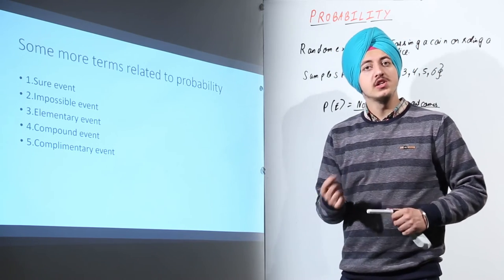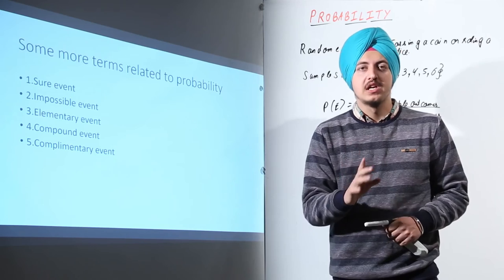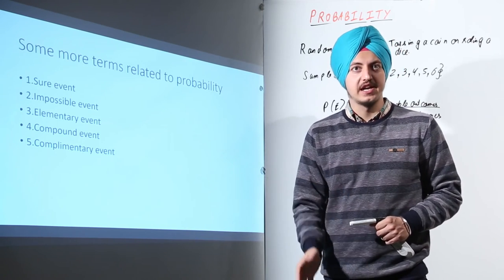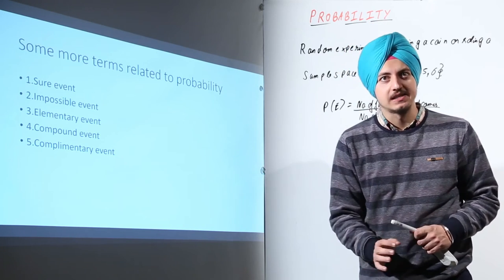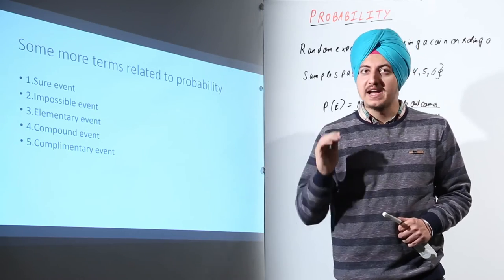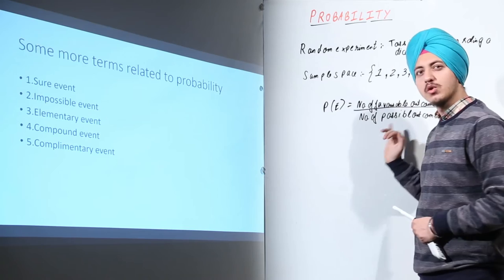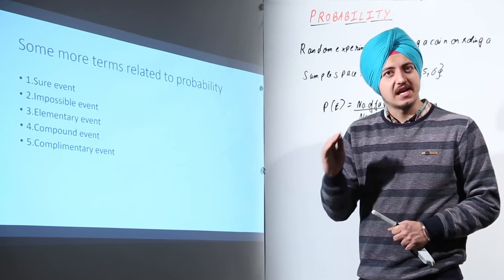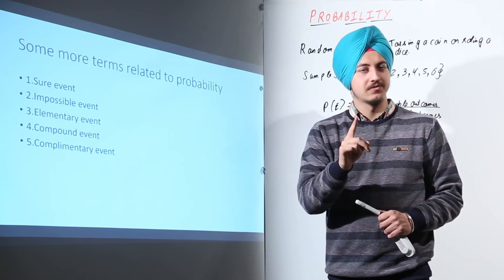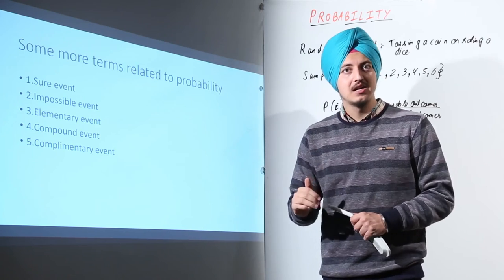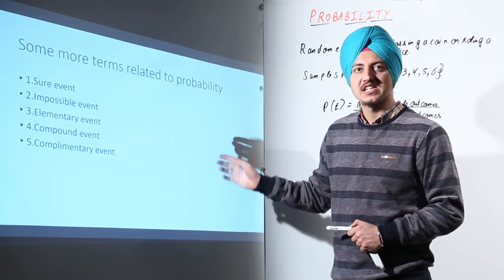The first term is sure event. A sure event is an event that has a probability of 100% or a probability of 1 — meaning that event is certain to occur in the random experiment. In rolling a dice, getting a number less than or equal to 6 — all outcomes 1, 2, 3, 4, 5, 6 satisfy this — so all 6 favorable outcomes out of 6 total gives a probability of 1, which is 100%. That is a sure event.